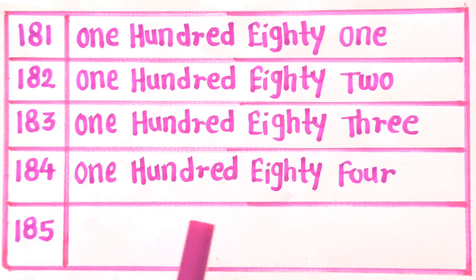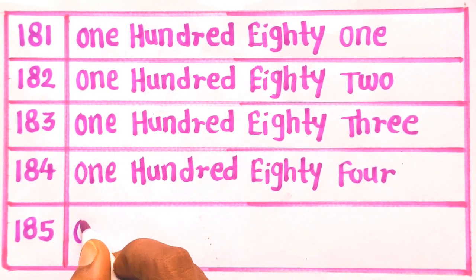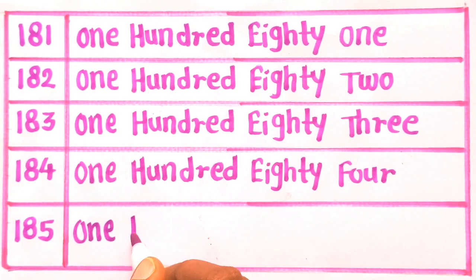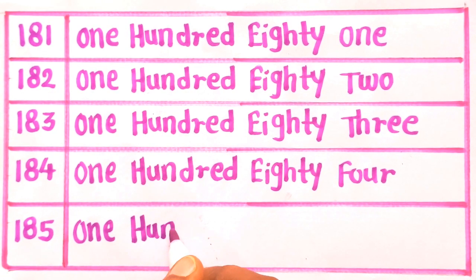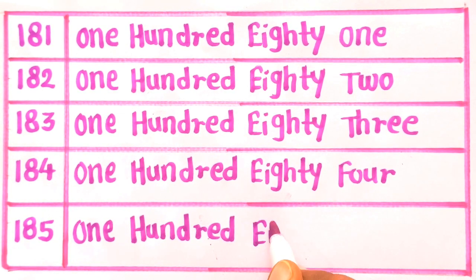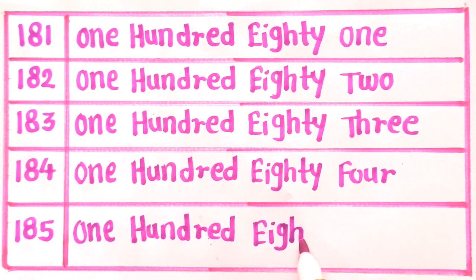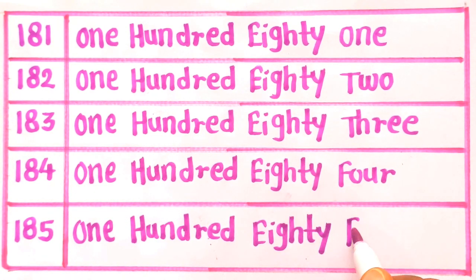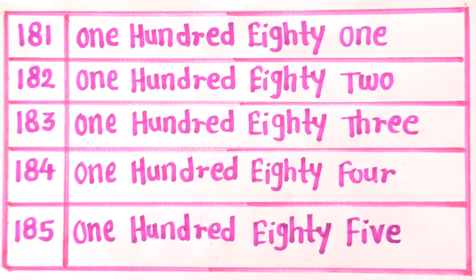Next is 185: O, N, E — 1. H, U, N, D, R, E, D — 100. E, I, G, H, T, Y — 80. F, I, V, E — 5. One hundred eighty five. 185.